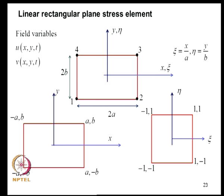We now look at rectangular elements. Consider a rectangular element of dimensions 2A and 2B with 4 nodes (1, 2, 3, 4), giving 8 degrees of freedom (U and V at each node). We introduce natural coordinates: xi = X/A and eta = Y/B. This maps the rectangular region to a square with vertices at plus-minus 1, with origin at (0,0). The advantage is that evaluating mass and stiffness integrals becomes simple and systematic in this coordinate system.